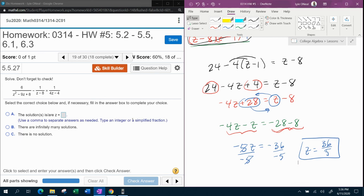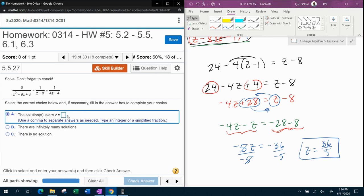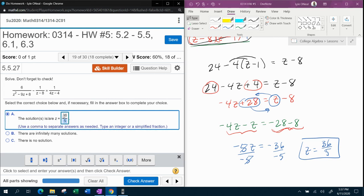Yeah, look at this. Simplified fraction is okay. Don't forget to check. Yeah, I could plug that in and check it, but since it doesn't make any denominator zero, it's probably correct. 36 fifths.